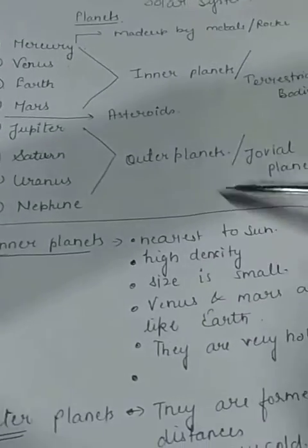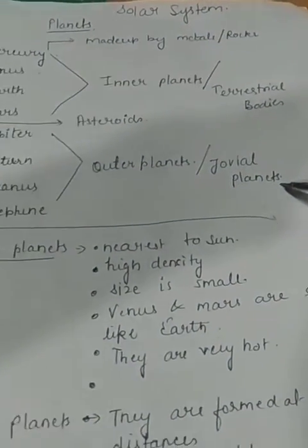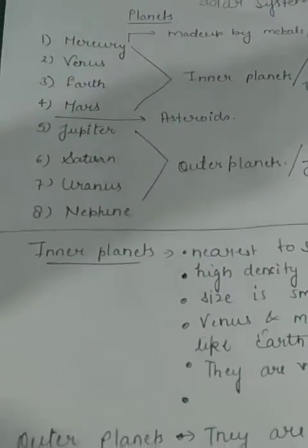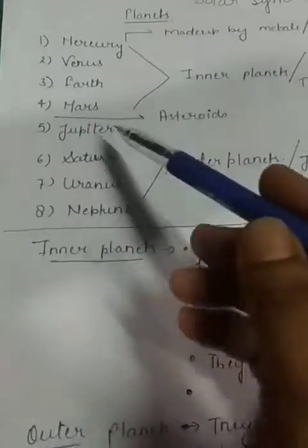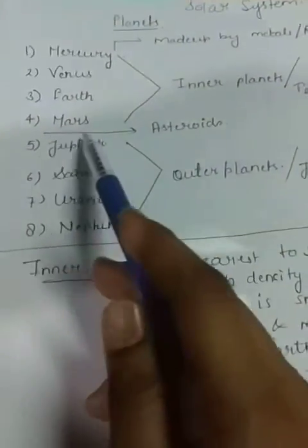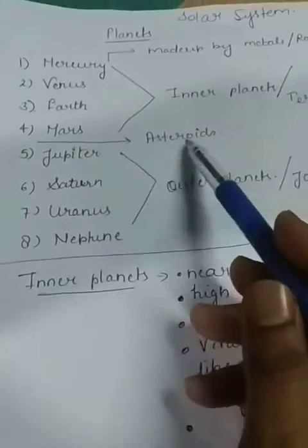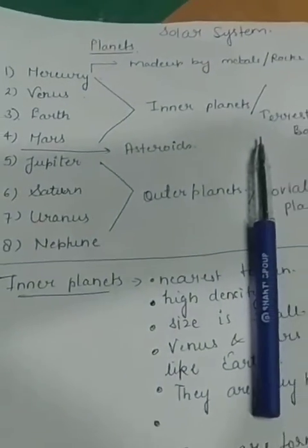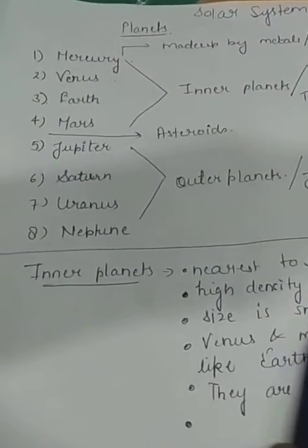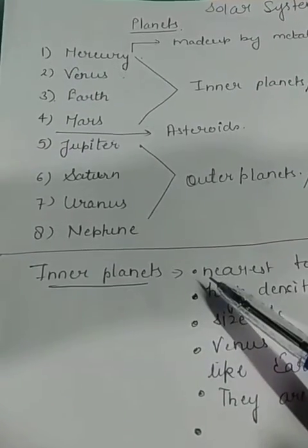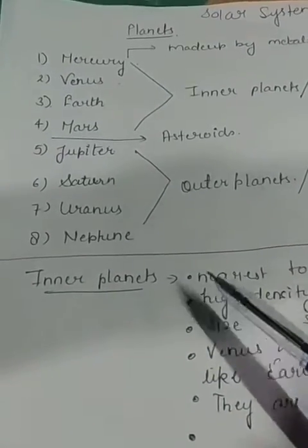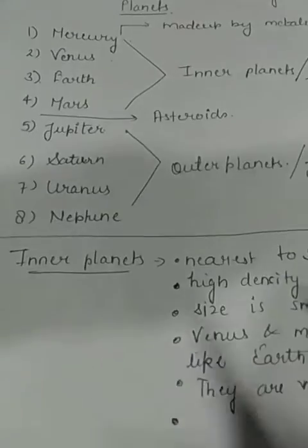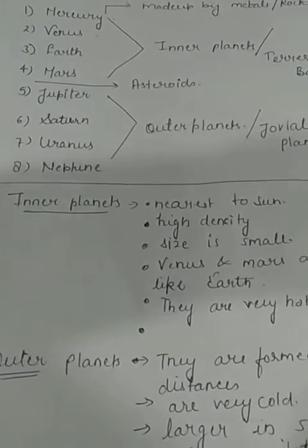The outer planets you can call jovial planets. Between Mars and Jupiter, some asteroids are formed — small particles known as asteroids — and you can see them in the solar system. The sun and its 8 planets, satellites like the moon, asteroids, comets, and a huge quantity of dust grains and gases form a complete family which we call the solar system.